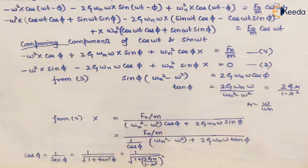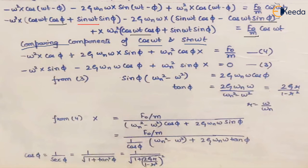We compare components of cos(ωt) and sin(ωt) on both sides. For the cos(ωt) terms: −ω²X·cos(φ) + 2ζω_nωX·sin(φ) + ω_n²X·cos(φ) = F₀/m. For the sin(ωt) terms, there is no sin(ωt) component on the right-hand side, so those terms equal zero.